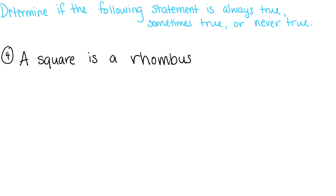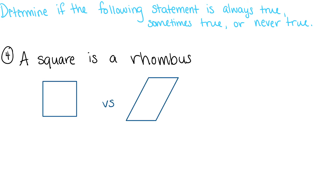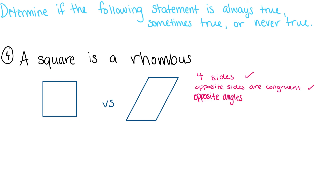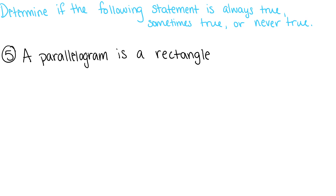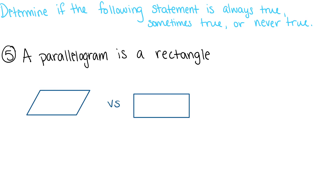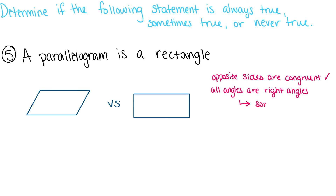A square is a rhombus. Squares have four sides, all four sides are congruent, and opposite angles are congruent. So this statement must always be true. A parallelogram is a rectangle. Parallelograms have four sides, opposite sides are congruent, and opposite angles are congruent, which is also true in rectangles. Therefore, as long as the angles in that parallelogram are 90 degrees, this statement is sometimes true.